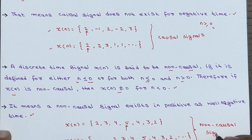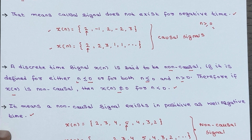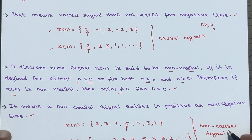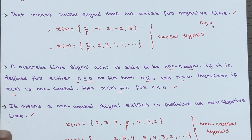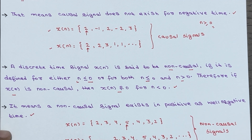Because both signals exist in positive as well as in negative time domain. This portion is the negative time domain, this is the positive time domain, and both signals are defined in these domains.